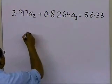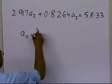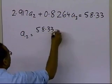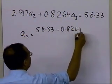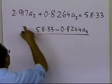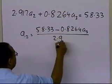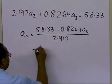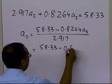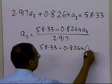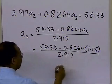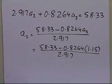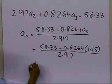So a2 equals 58.33 minus 0.8264 times a3, divided by 2.917. Substituting a3 equals 1.15, we get 58.33 minus 0.8264 times 1.15, divided by 2.917, which equals 19.67.